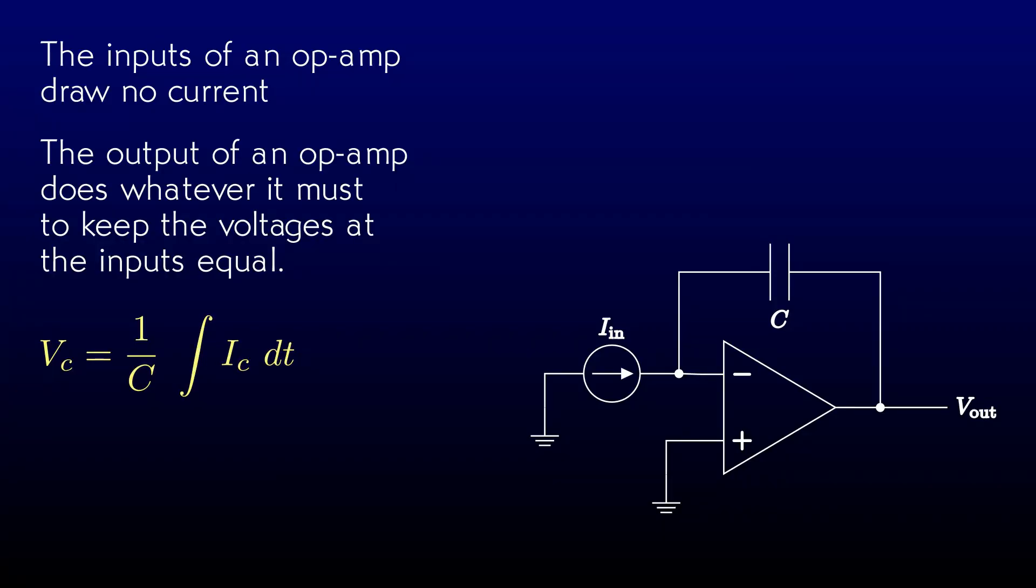The voltage on a capacitor is the integral of the current flowing into it divided by the capacitance. For the calculus challenged, think of it as the height of the water in the bucket. Since no current flows into the op-amp inputs, all the input current has to flow through the capacitor. We know what the voltage across the capacitor has to be. The op-amp is holding the voltages at its two inputs equal, so the left end of the capacitor has to be at ground potential. It's a virtual ground. The right-hand end and the output voltage of our circuit therefore must be the negative of the voltage across the capacitor.